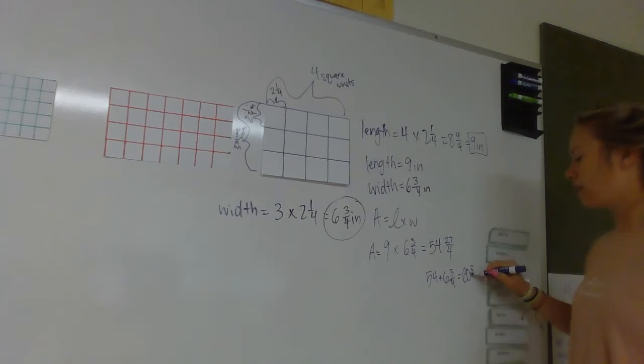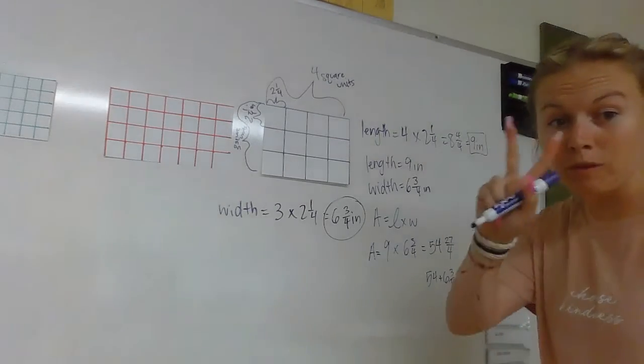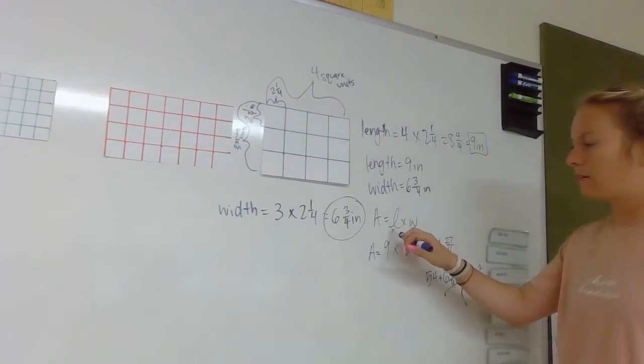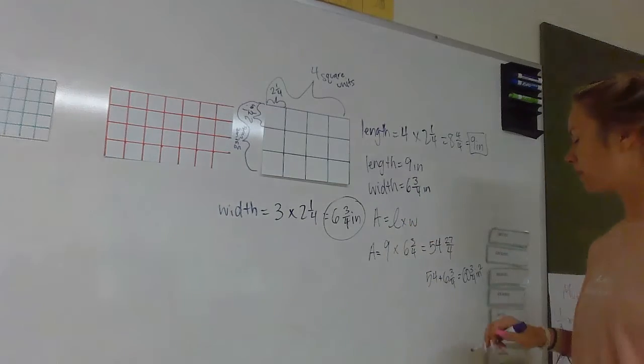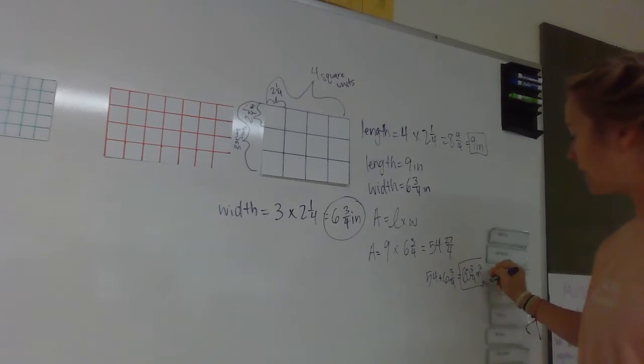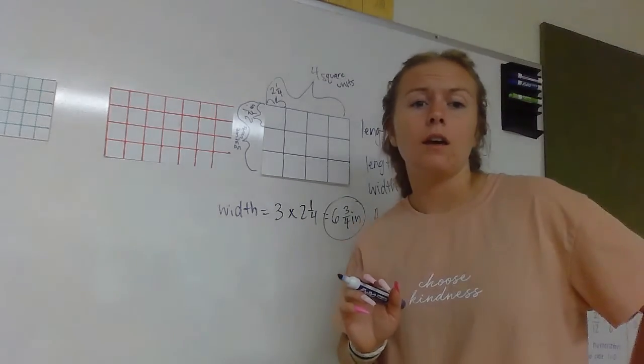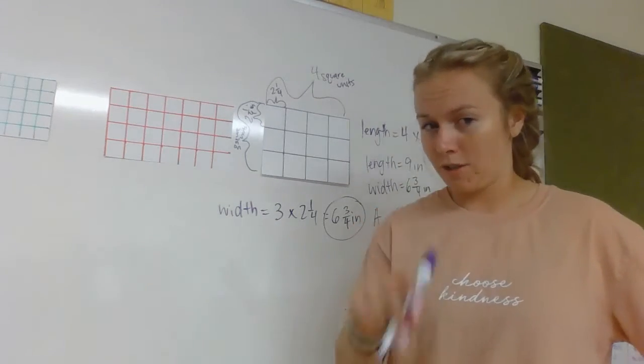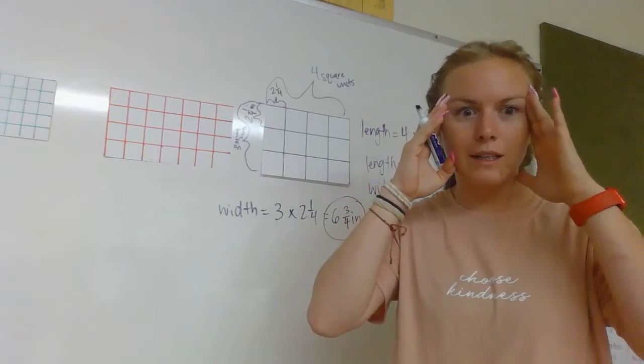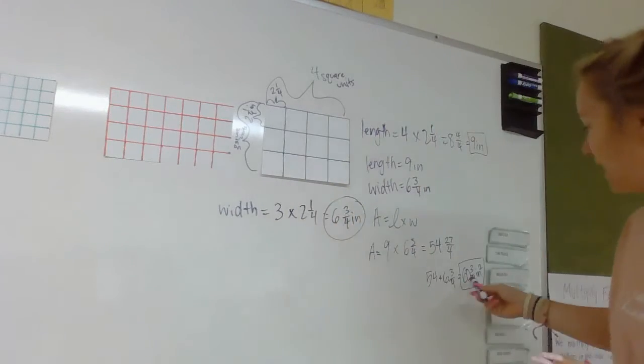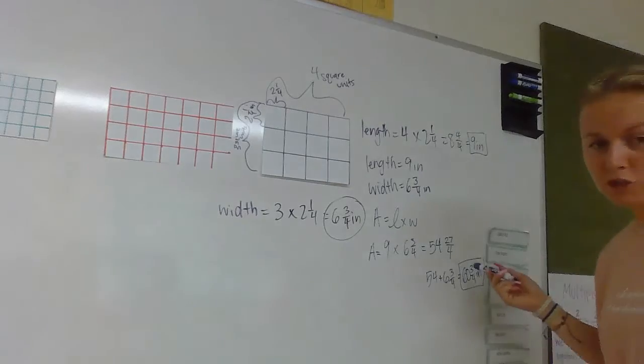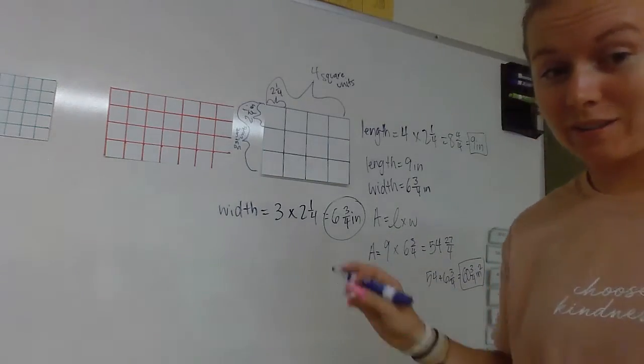60 and 3/4 inches cubed—I mean sorry, squared, because we're working with two dimensions on this one. Right, it's area, so length times width. All right, that would be your answer for that one: 60 and 3/4 inches squared. Squared, it's inches squared.